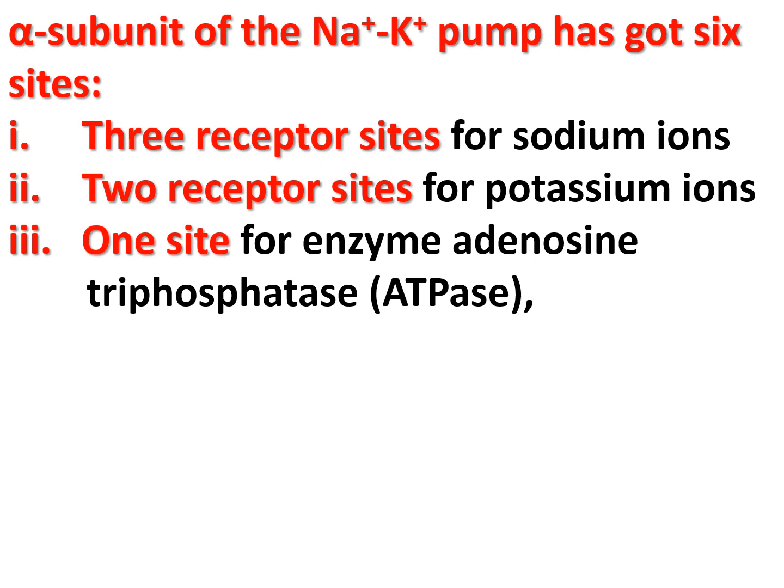The alpha subunit of the sodium-potassium pump has six sites: three receptor sites for sodium ions on the inner surface of the protein molecule facing the cytoplasm, two receptor sites for potassium ions on the outer surface facing the extracellular fluid, and one site for the enzyme adenosine triphosphatase located near the sodium binding sites.